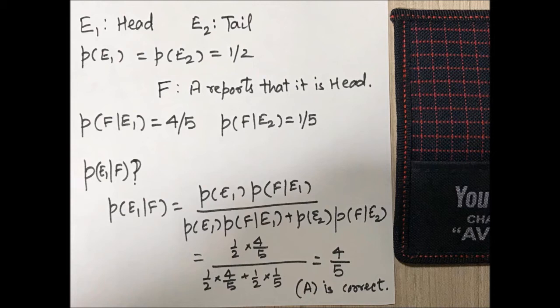And if there is not a head—that is, if there is a tail—still the person says that it is a head, so the conditional probability becomes 1/5. Why is it the conditional probability?